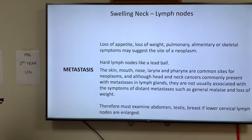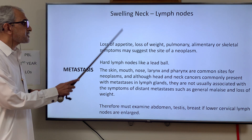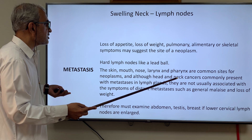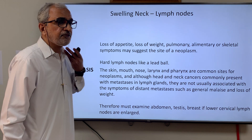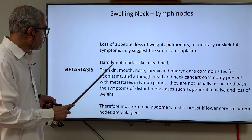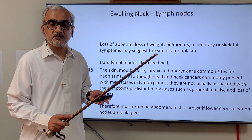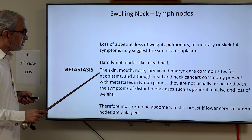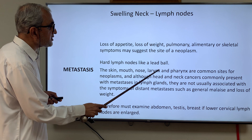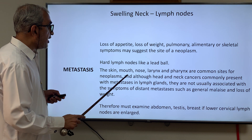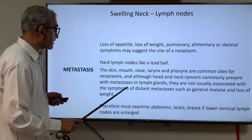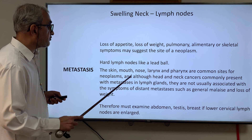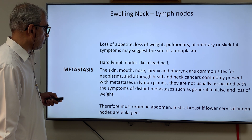For metastasis: if a patient gives a history of loss of appetite, significant weight loss, pulmonary symptoms, alimentary symptoms, or skeletal symptoms, and there are lymph nodes in the neck — especially if the lymph nodes are hard — then one must think of metastasis. The skin, mouth, nose, larynx, and pharynx are common sites for neoplasms. Although head and neck cancers commonly present with metastatic lymph nodes, they are not usually associated with symptoms of distant metastasis such as general malaise.